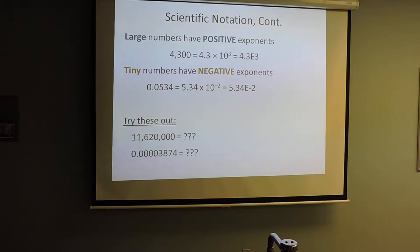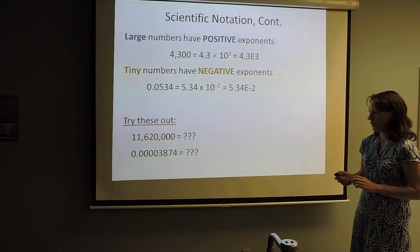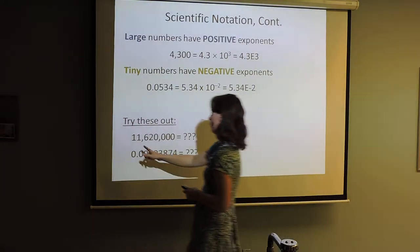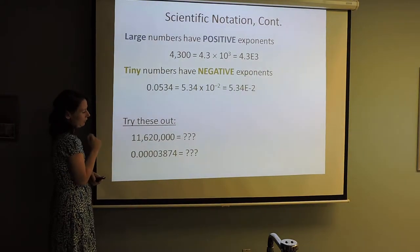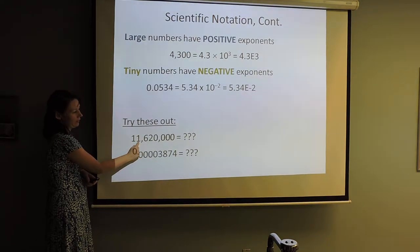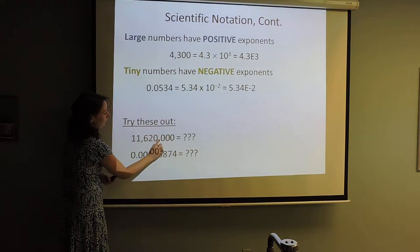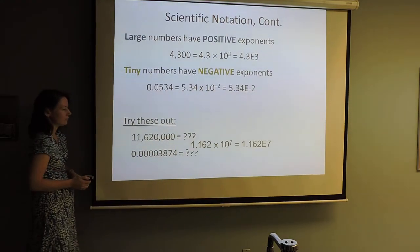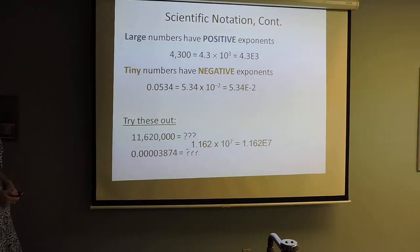Let's work through 11,620,000. Where does the decimal need to go? It goes between the two ones — always digit, decimal, then the rest of your digits. So this would be 1.1 times 10 to the 1, 2, 3, 4, 5, 6, 7 — that's 1.162 times 10 to the 7th.